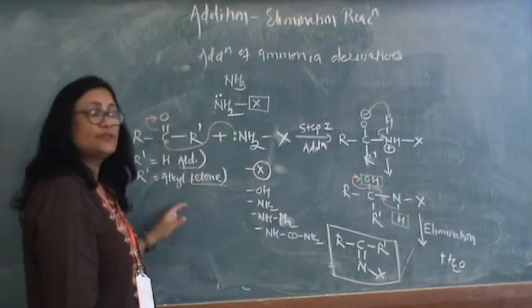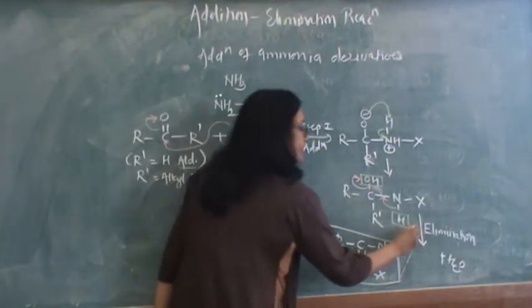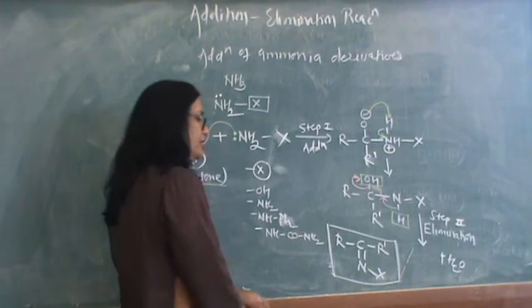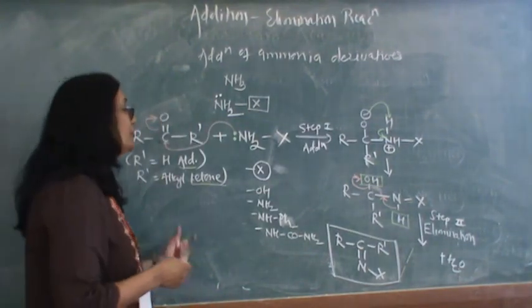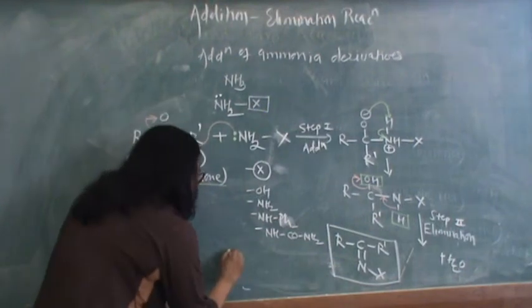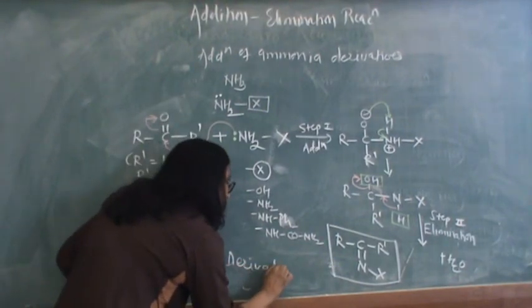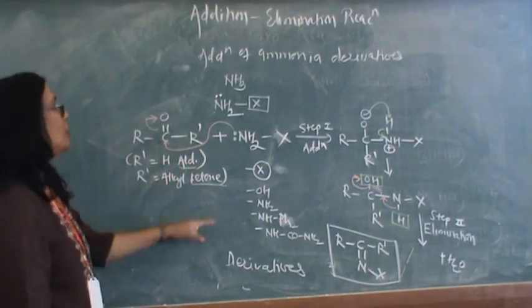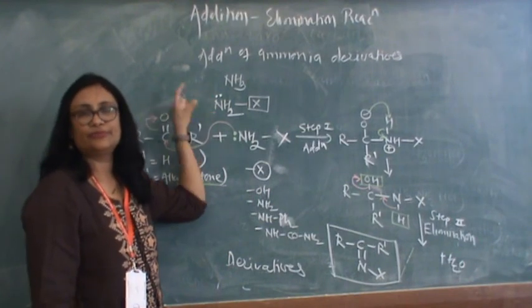This is how we can show an addition-elimination reaction for ammonia derivatives. And this is how it takes place in two steps. In step one, it is undergoing addition, and in step two, it is undergoing elimination to form the product. Most of these products are stable and these are called as derivatives. These are the derivatives of carbonyl compounds which can be obtained by addition of these ammonia reagents. Thank you.